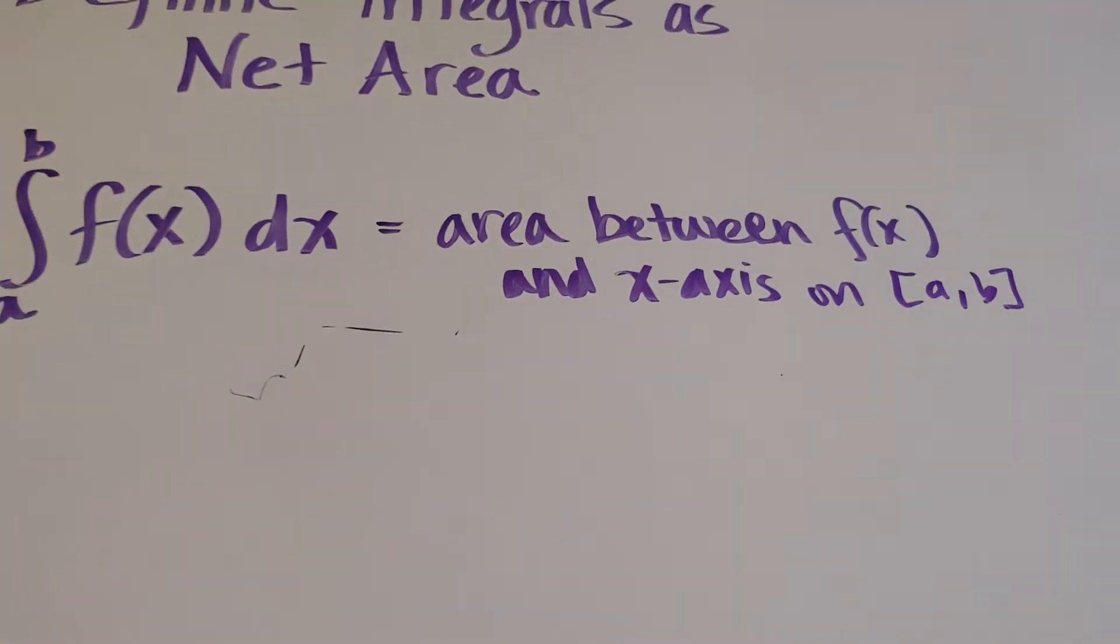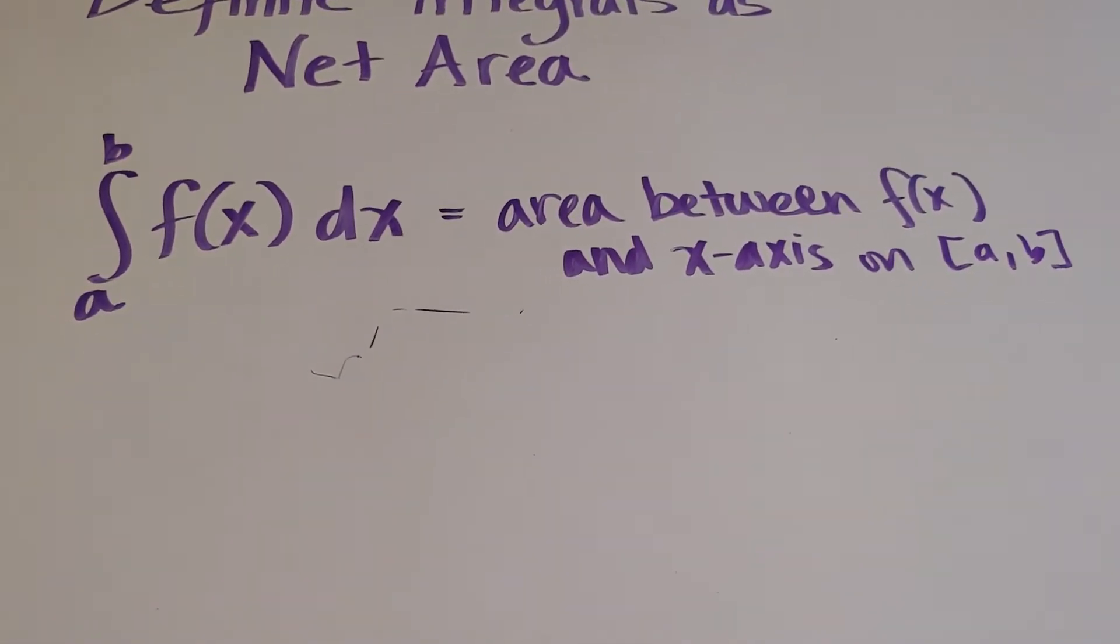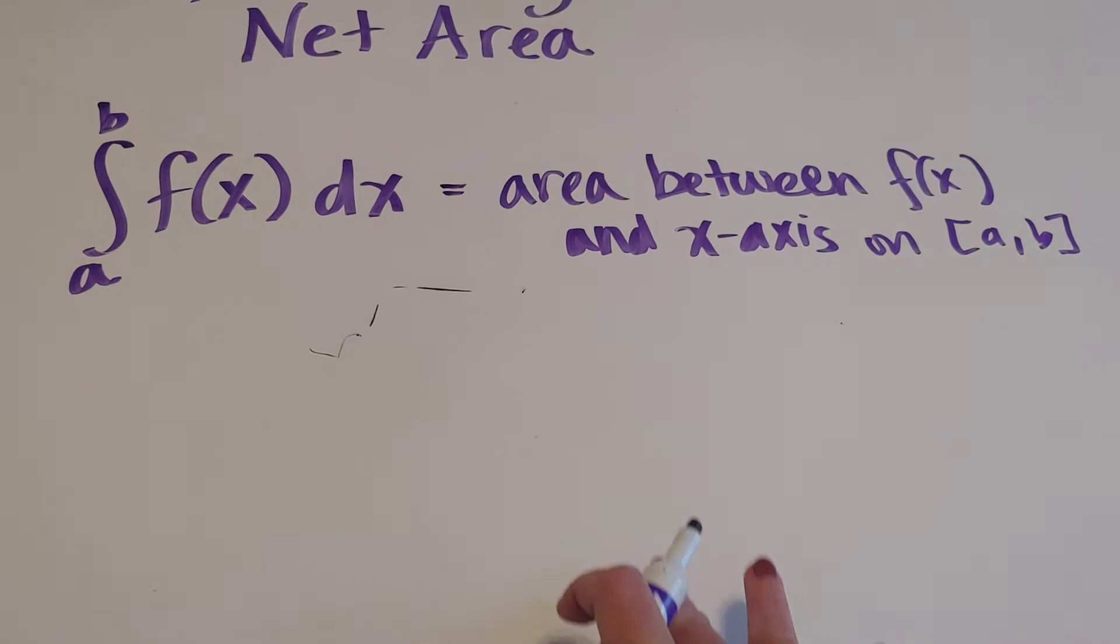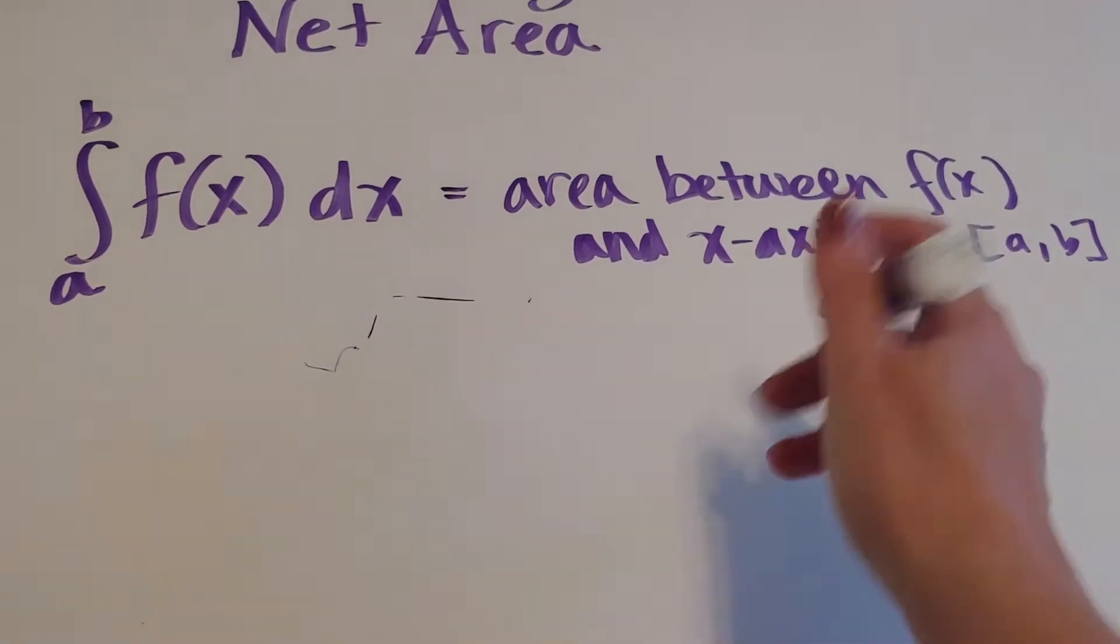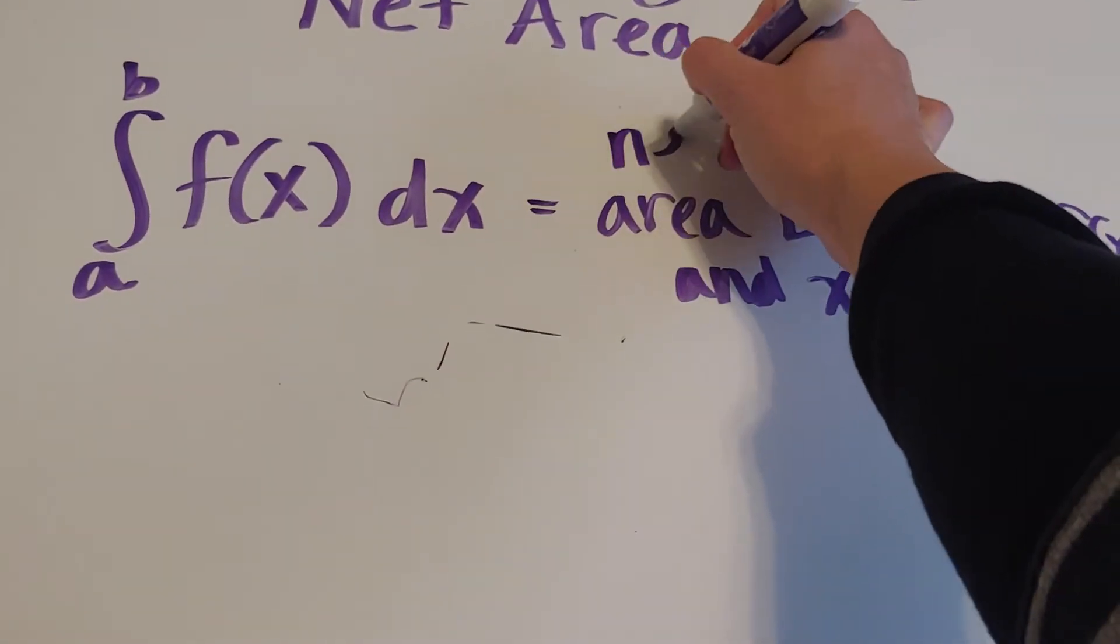Now, as we also saw when we were doing Riemann sums, if the area is above the x-axis, it's positive. If it's below, it's negative. What this does is actually find the net area.